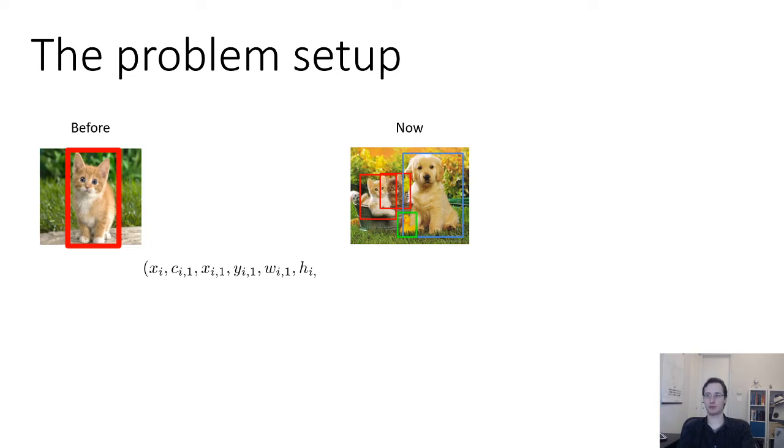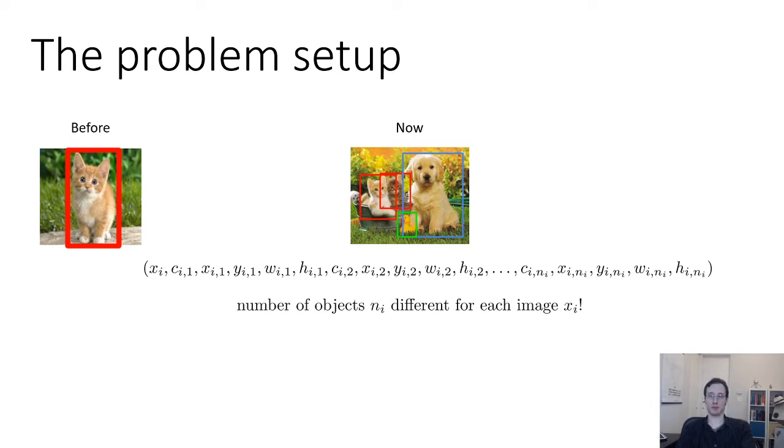For the first object and a class CI2, XI2, YI2, WI2, HI2 for the second object and so on and so on for potentially n different objects in the image. And the number of objects might be different for every image.